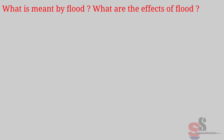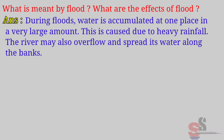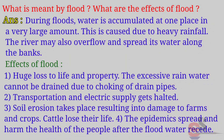Let's recall — Textbook page 66: What is meant by flood? What are the effects of flood? Answer: During floods, water is accumulated in one place in a very large amount, caused by heavy rainfall. Rivers may overflow and spread water along their banks. Effects of flood include: huge loss of life and property; excess rainwater cannot be drained due to choking of drain pipes; transportation and electric supply get halted; soil erosion damages farms and crops; cattle lose their lives; and epidemics spread after flood water recedes.